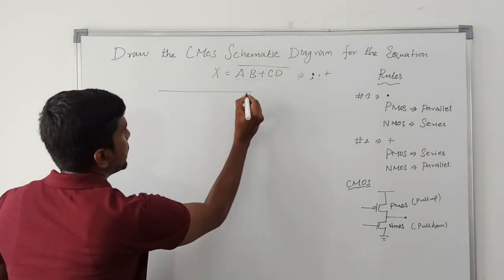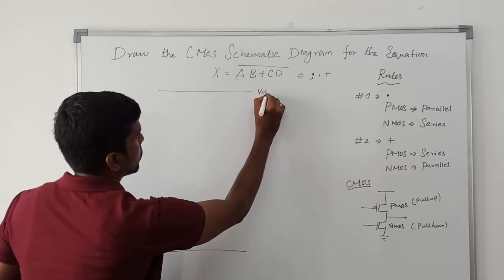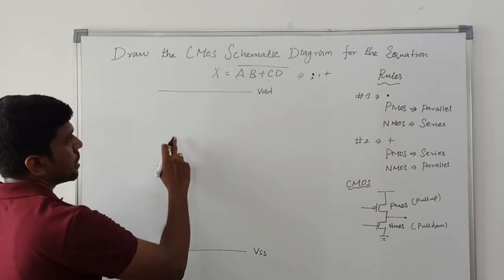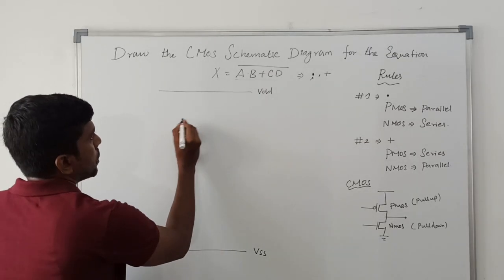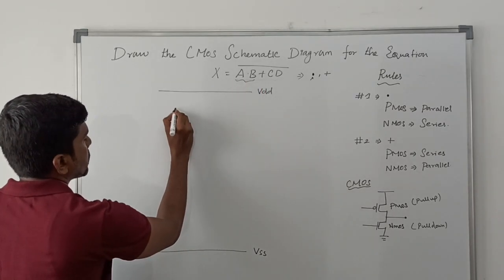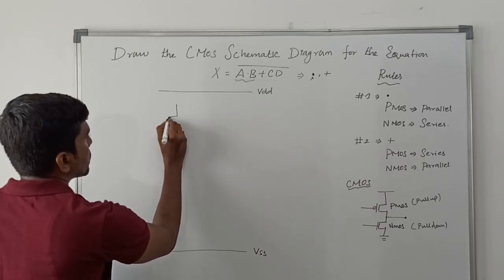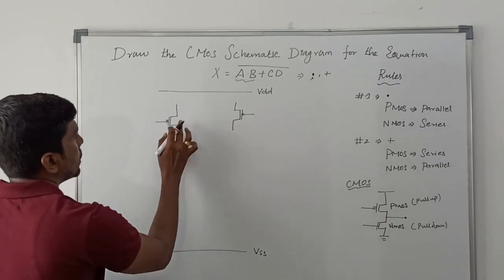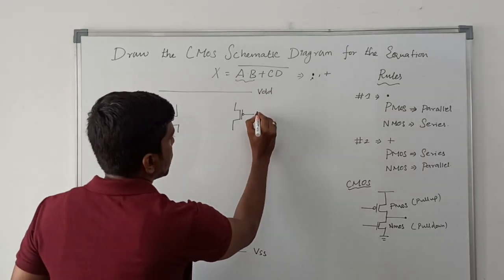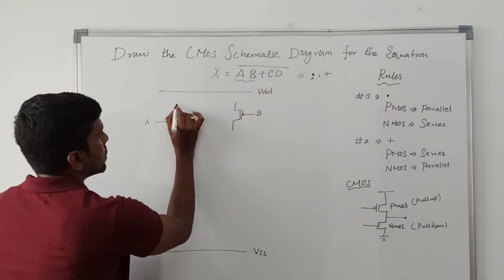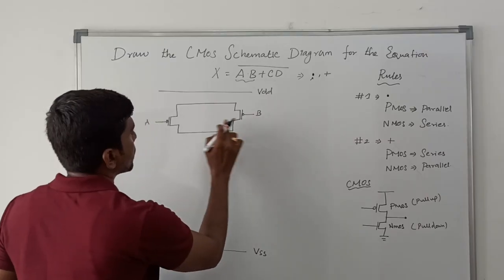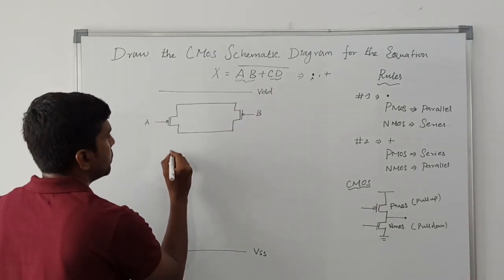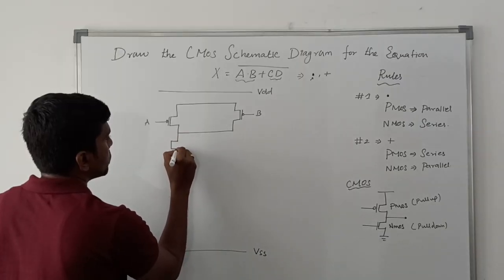First I draw VDD and VSS power supply lines — the top line is VDD and the bottom line is VSS. Between VDD and VSS I am going to draw the pull-up and pull-down networks. Taking the first product term A dot B: the dot operation means two PMOS transistors are connected in parallel. Similarly for C dot D, it is also parallel.